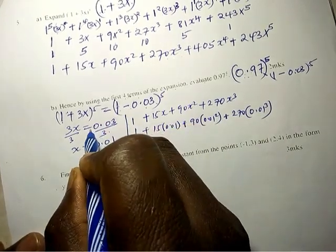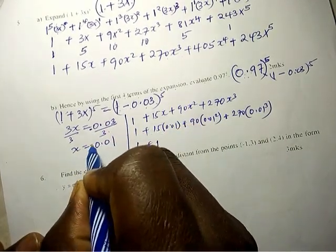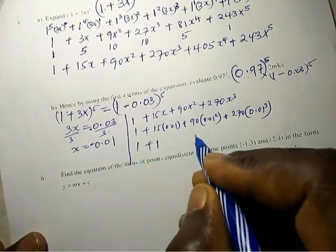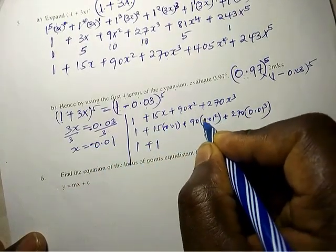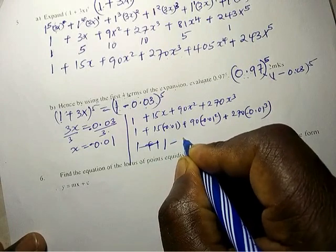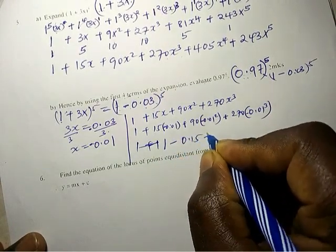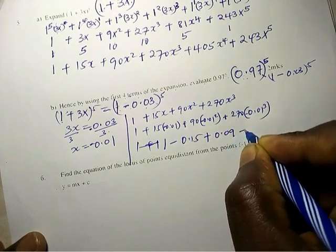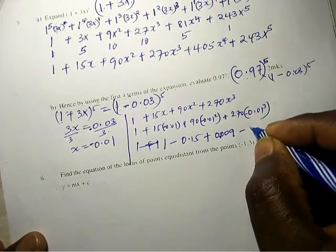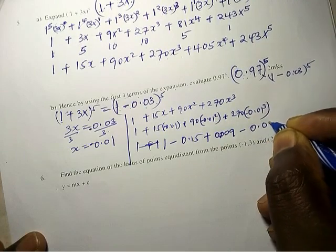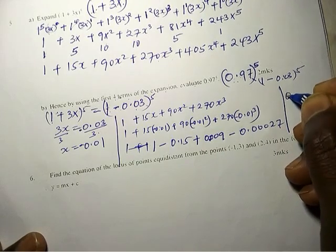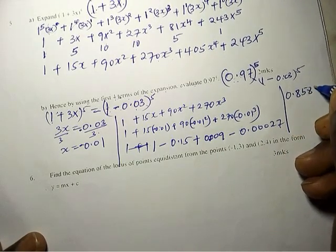I noticed this should be negative here. Please don't forget. So this becomes negative: 1 - 0.15 + 0.09 - 0.00027. So the final answer will be 0.85873.